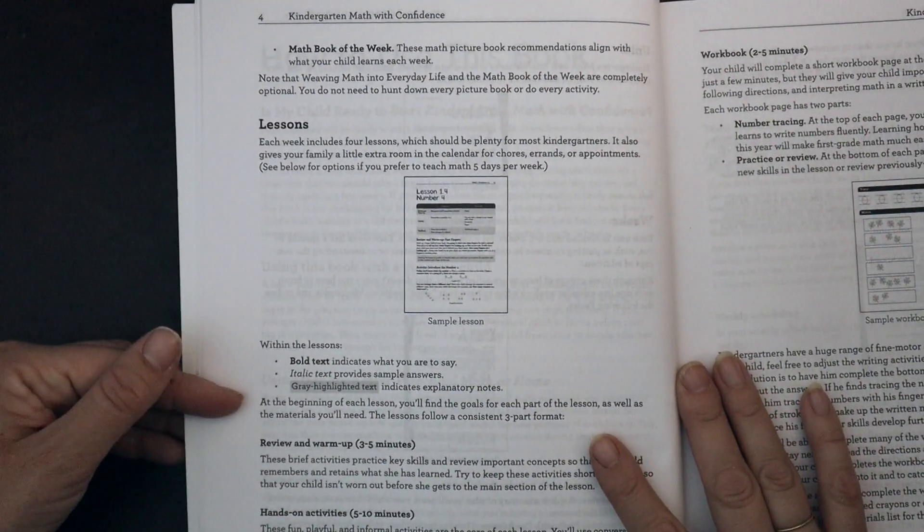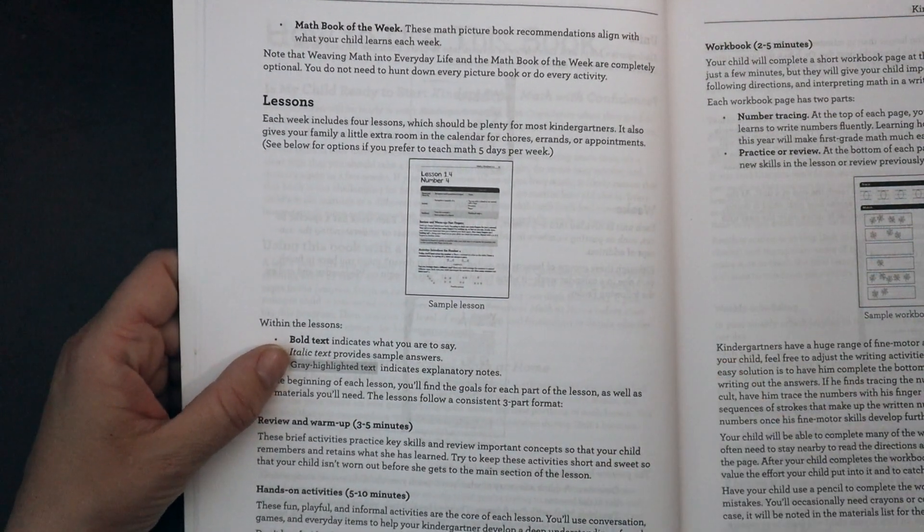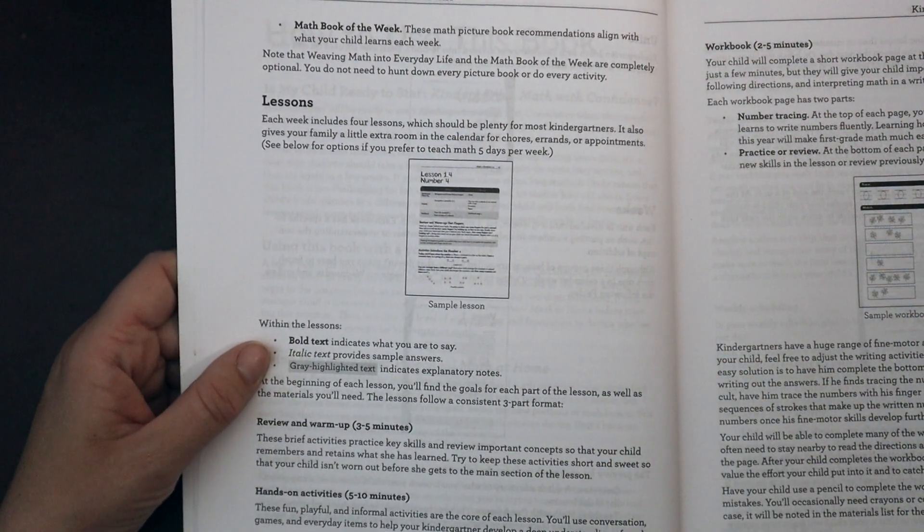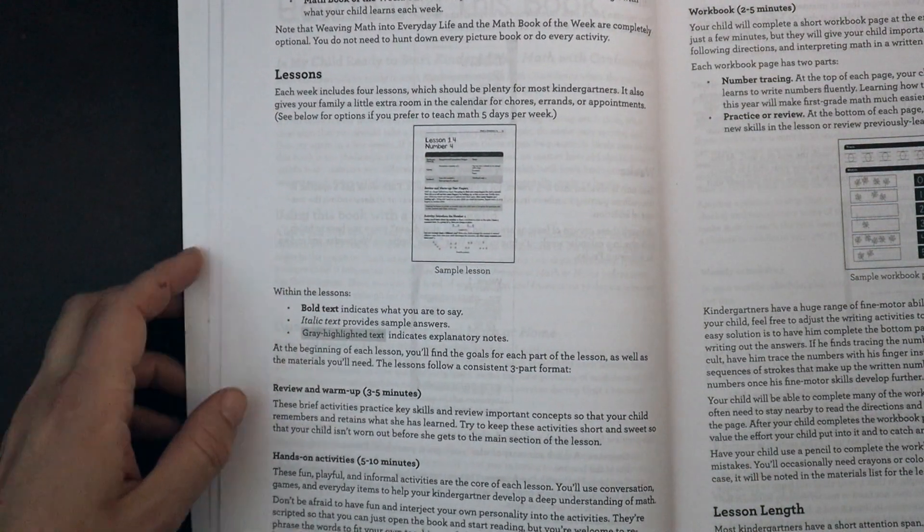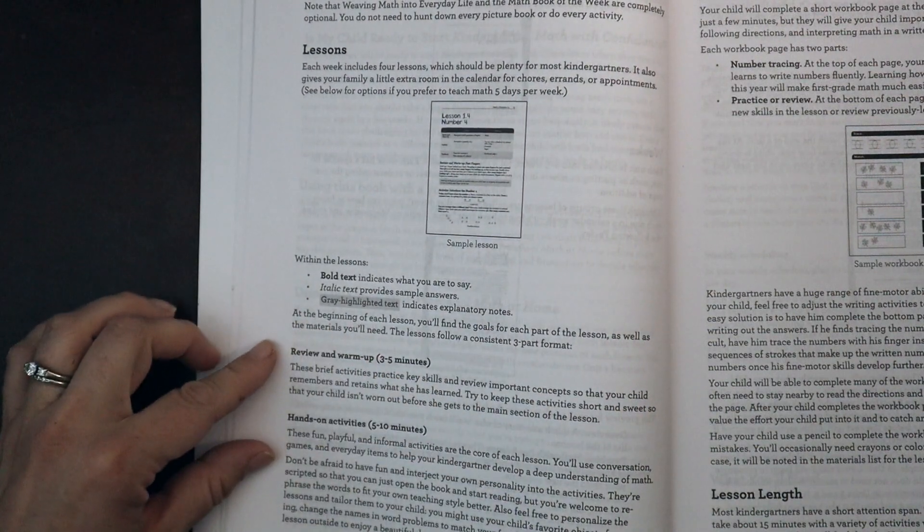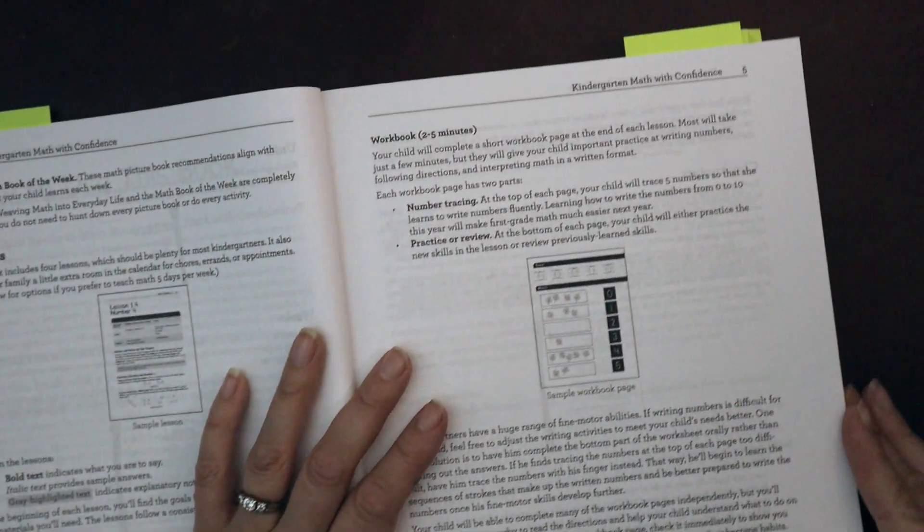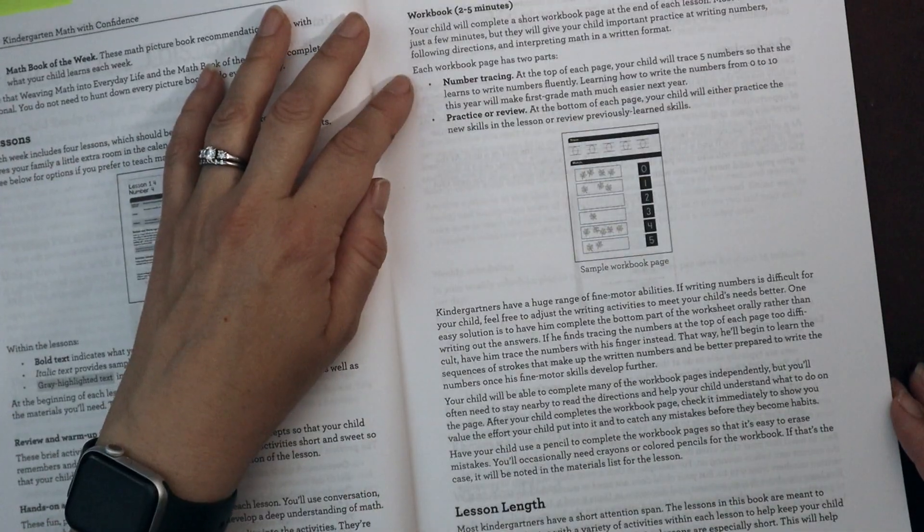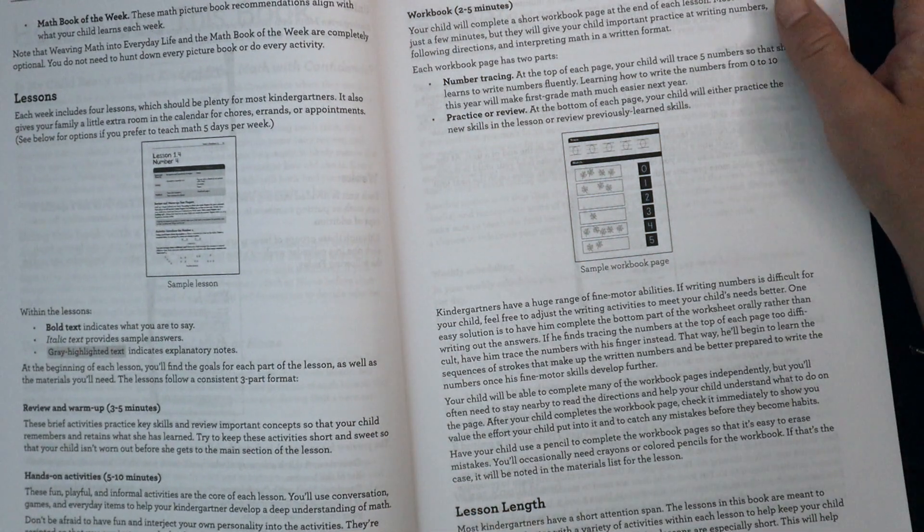Then we have the lessons that all have some bold text for what you are to say. This is a scripted program if necessary. The italics then have the answers and then the gray highlighted part explains the information. Each lesson is broken up into a review and warm-up, hands-on activity, and then workbook page. The workbook is very straightforward.